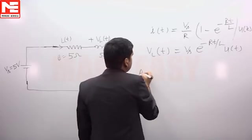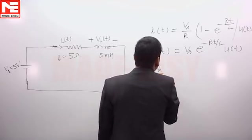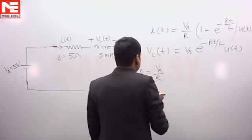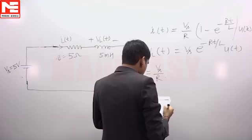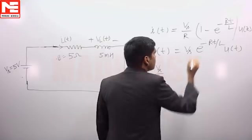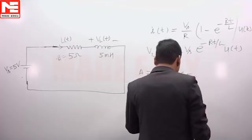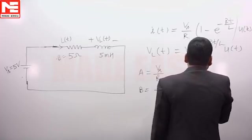Now from here A is equal to Vs by R. Vs is the source voltage, R is the resistance, and B is equal to R by L, inverse of time constant, and C is equal to Vs.